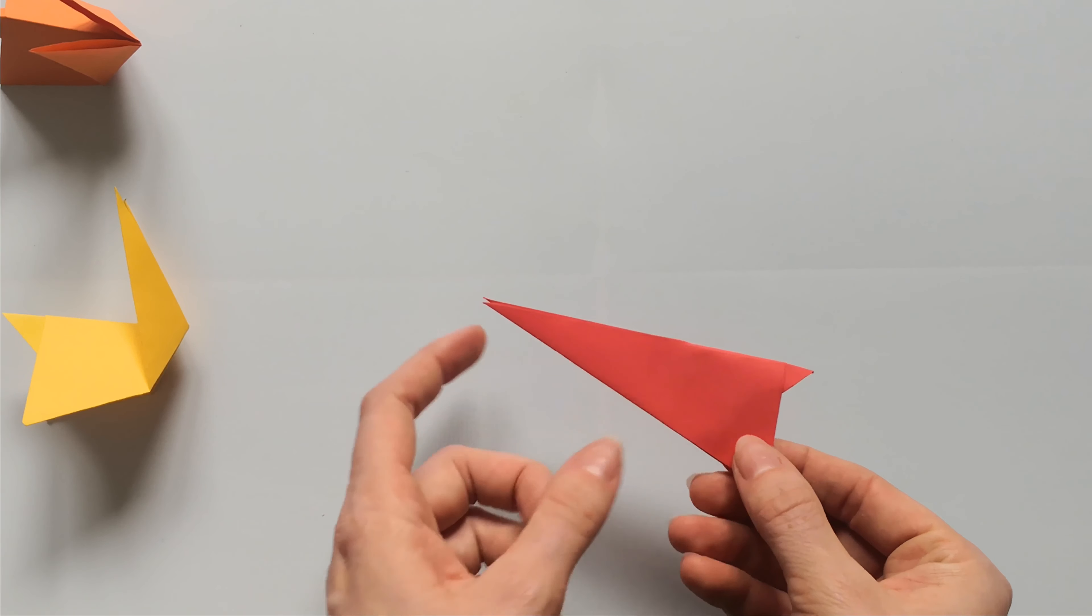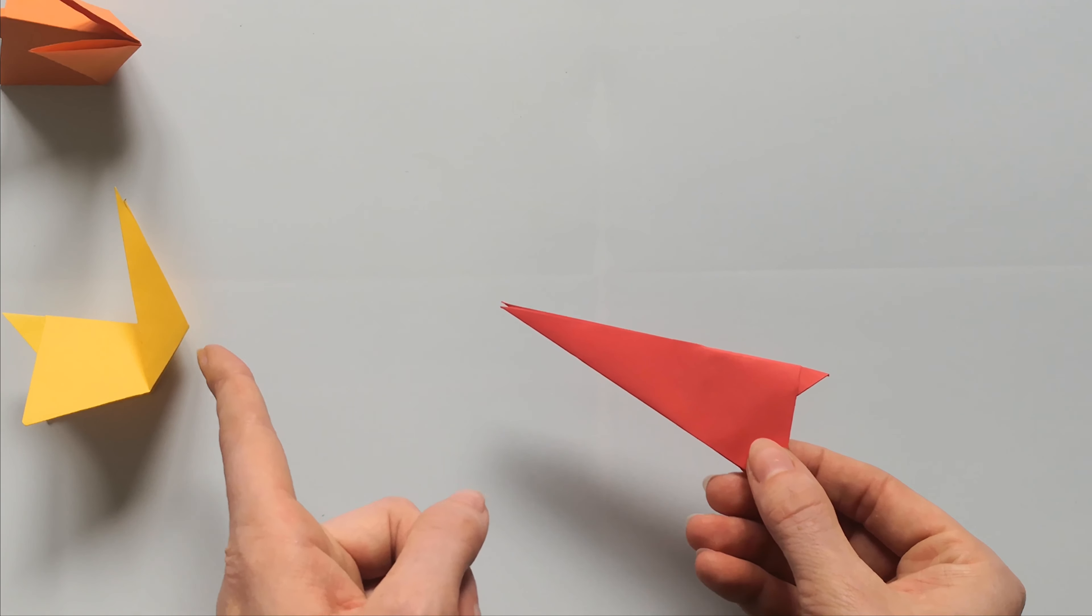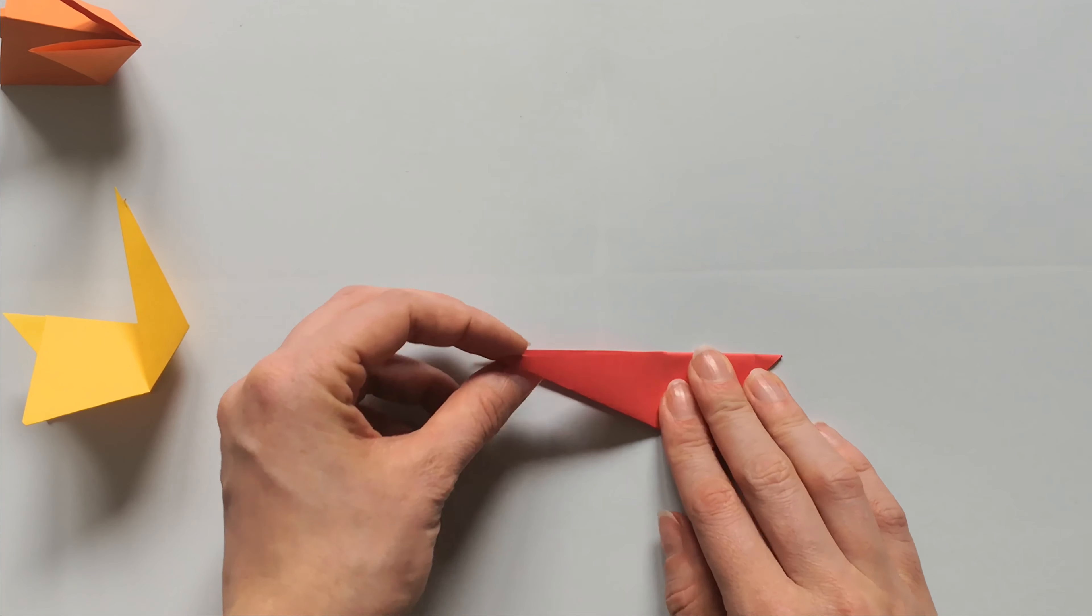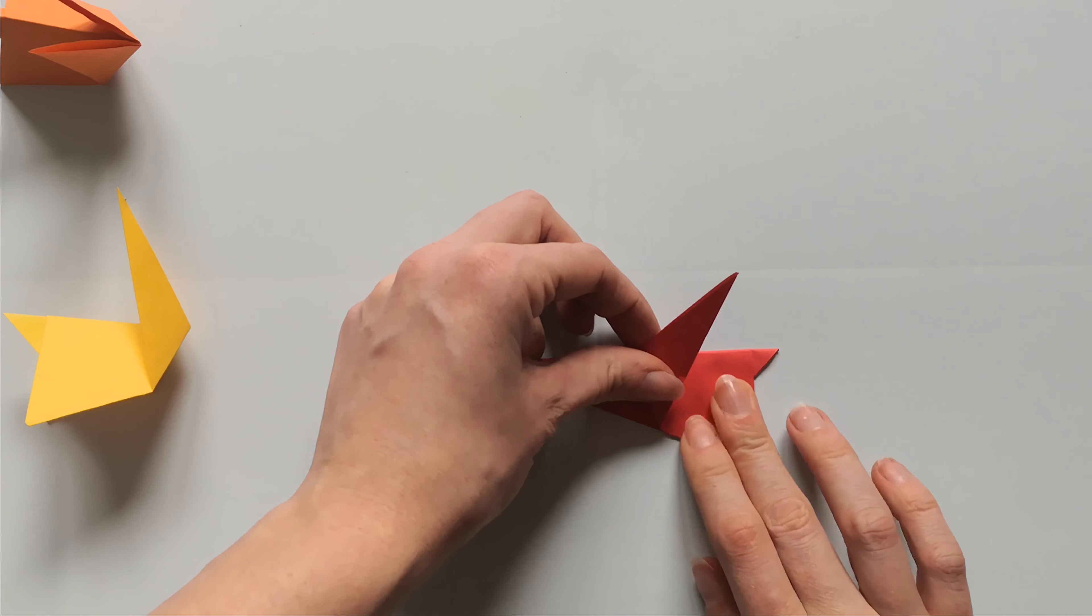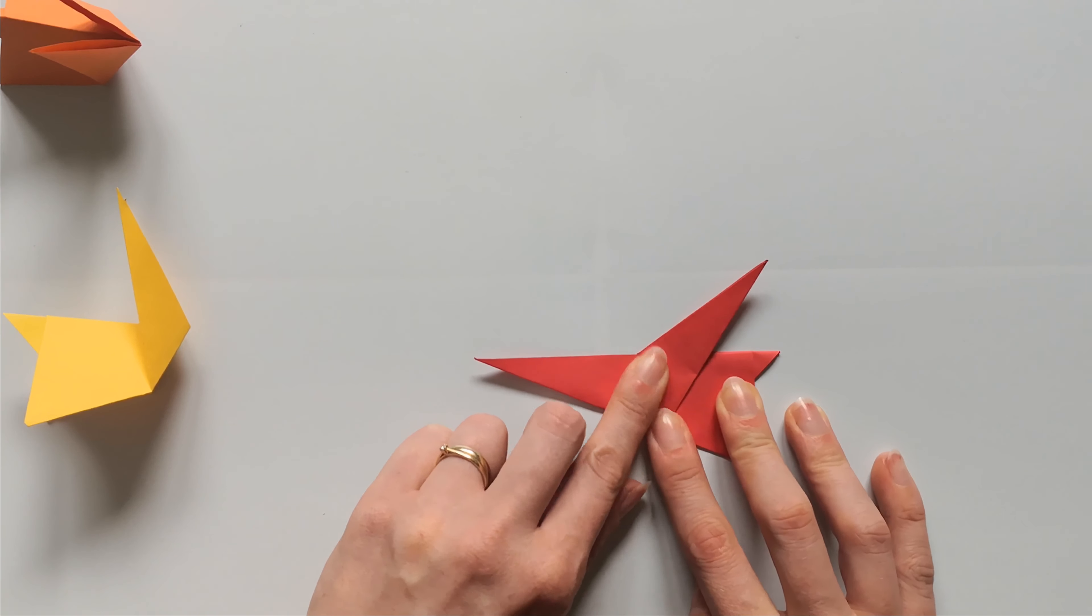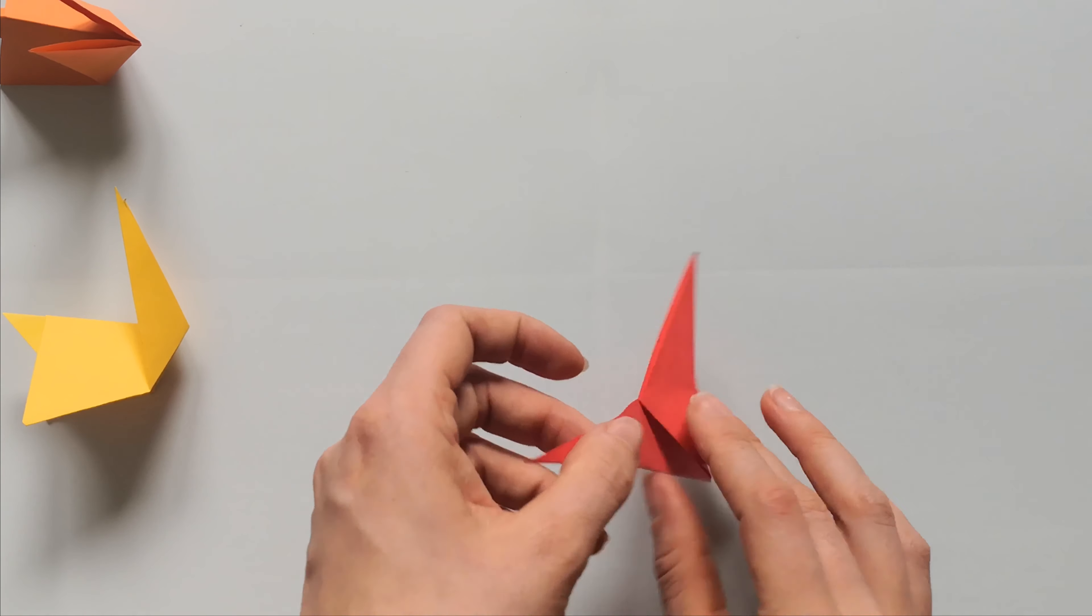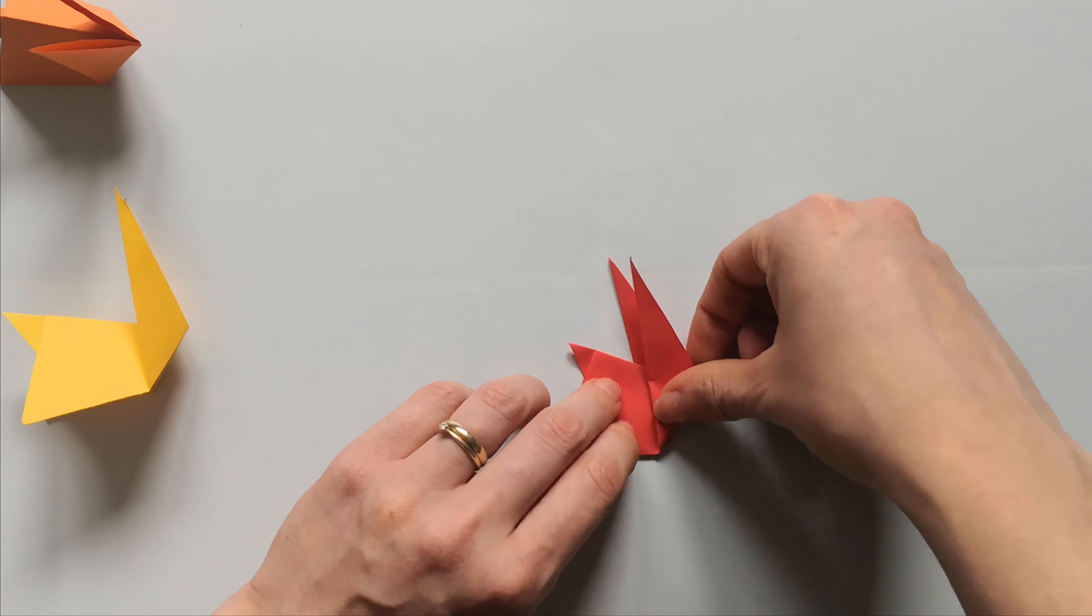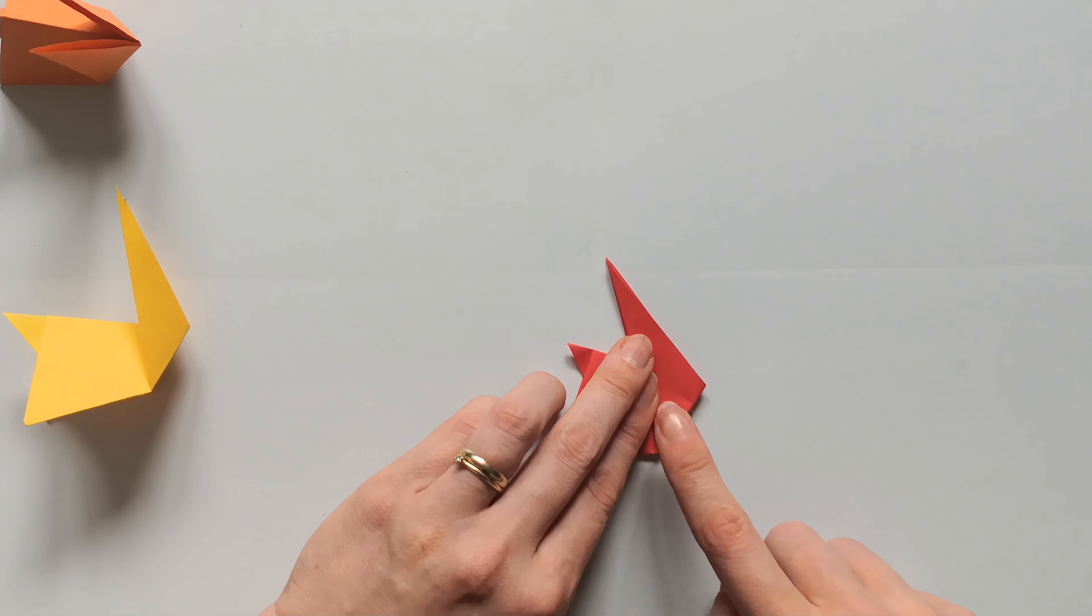Now, all that is left is folding the ears or head piece of the bunny. So, just take the upper layer. Fold it upwards. Like so. Press it down. And now, turn it around and fold this part the same. Make sure that these two bottom lines are aligned.